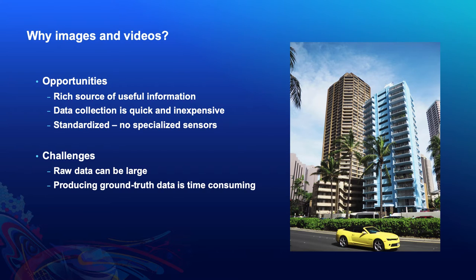Additionally, for a computer to learn to perform this task automatically, it will need to have seen some examples. We need to provide the ground truth against which we'd like to evaluate the model's performance. For example, if we want the computer to give us the locations of every car in an image, we'll have to provide it with the locations of every car in a set of images. For tasks that are more nuanced, we might need a large number of these examples, and assembling such a dataset can take a lot of person hours. Taken together, the cost of storage and processing of this data can add up quickly.